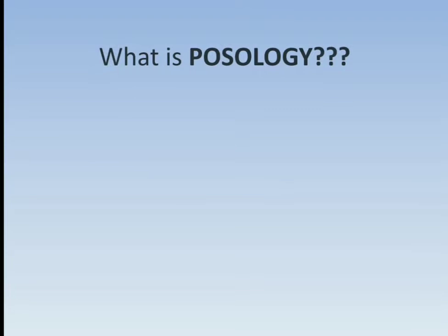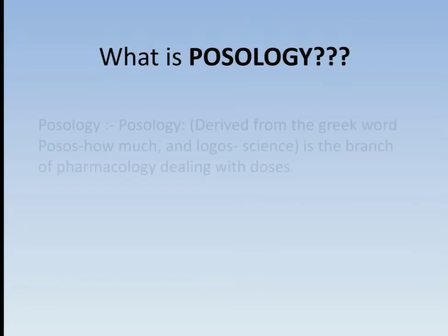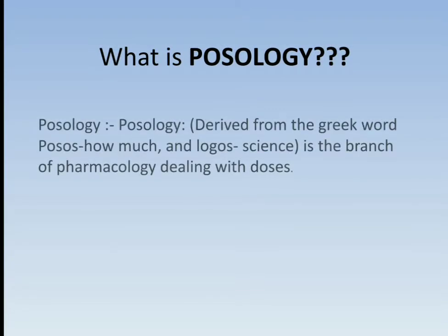Pathology is derived from the Greek word pathos, meaning 'how much,' and logos meaning 'science.' It is the branch of pharmacology which deals with the doses. Next, we have to know about the formulas for the calculation of doses.